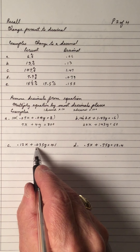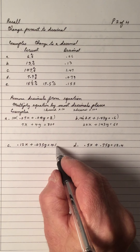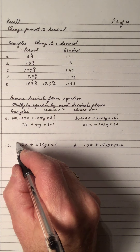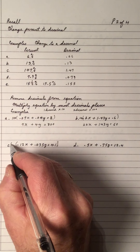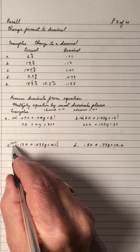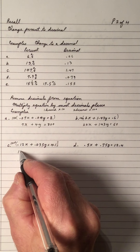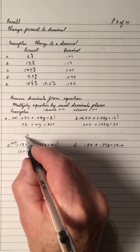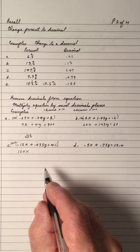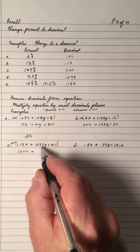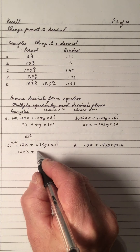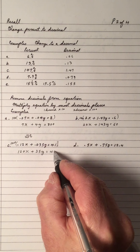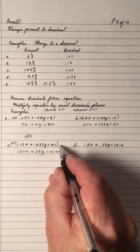Example C: 0.12, 0.035, and 41. We have two decimal places and three decimal places, so multiply this equation by 1000. 1000 × 0.12 = 120x. 1000 × 0.035 = 35. 1000 × 41 = 41,000, because the decimal moves three places to the right.